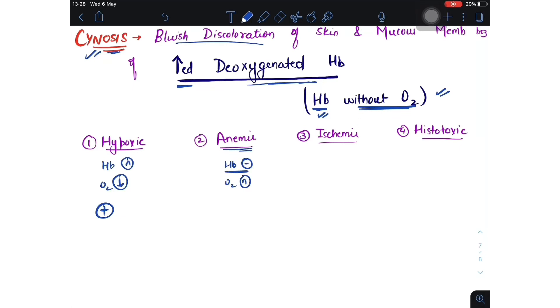Now comes the ischemic, which is the difficult one. Here hemoglobin is also normal, O2 is normal, but still we see cyanosis. This is because there is increase of tissue consumption.